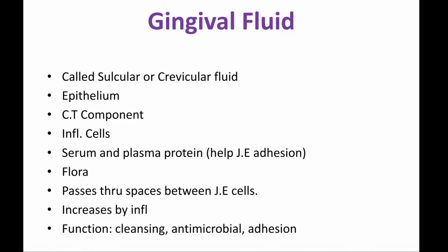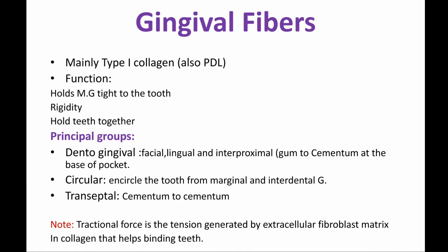The gingival fluid, also called sulcular or crevicular fluid, contains epithelium, connective tissue components, inflammatory cells, serum, and plasma. Plasma proteins help increase the adhesion of the junctional epithelium. The fluid passes through the spaces between junctional epithelial cells — those spaces increase during inflammation, which is why the amount of crevicular fluid increases with inflammation. The functions of crevicular fluid are cleansing, antimicrobial action, and adhesion of the junctional epithelium.